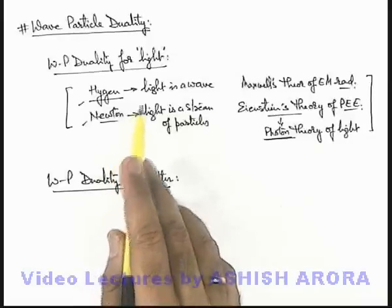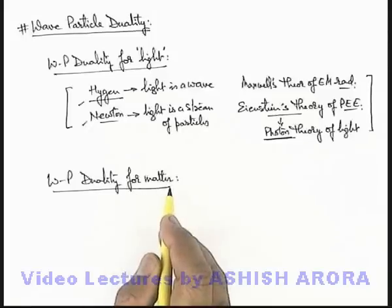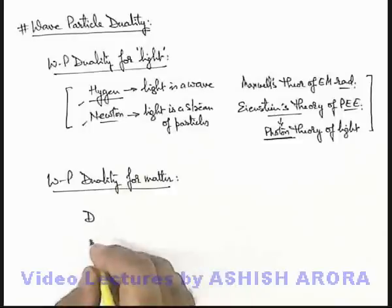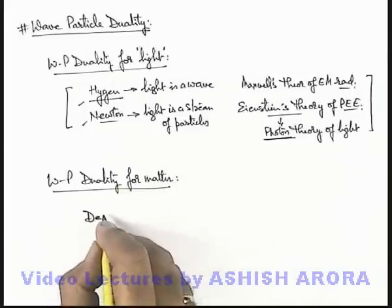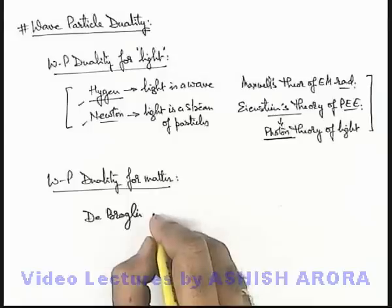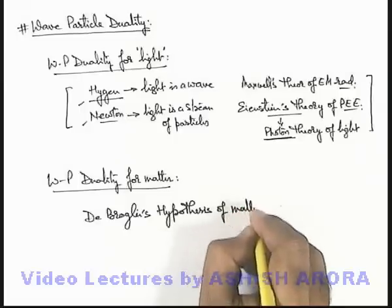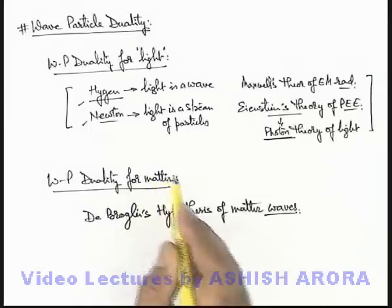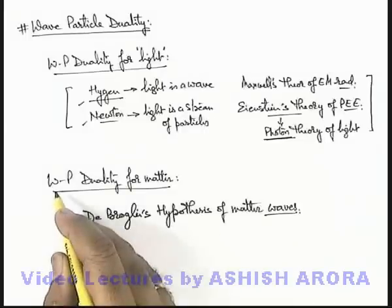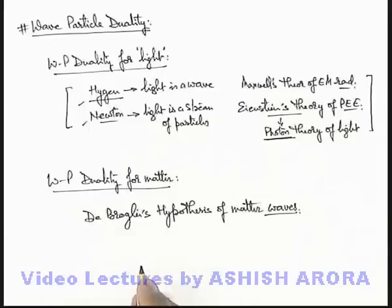Similar to wave-particle duality for light, it was later on considered that the same wave-particle duality can also exist for matter. This was taken up on the basis of Einstein's photon theory, in which Einstein calculated the momentum of photons, which was analyzed in detail by de Broglie. He gave de Broglie's hypothesis of matter waves, in which he provided details that moving physical particles can also be treated like a wave — that means physical particles have their inertial character as well as some wave character, and the wave character of a moving particle increases with their momentum. This will be discussed in detail in later sections of the chapter.